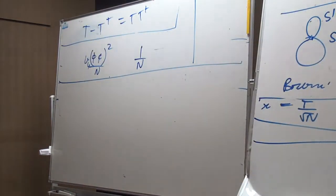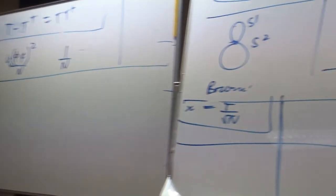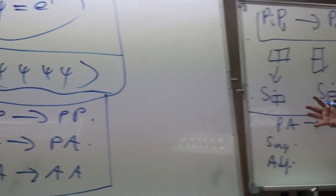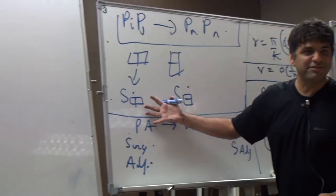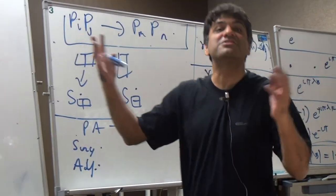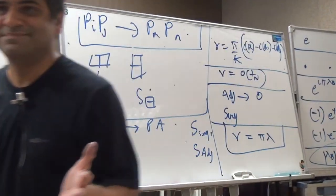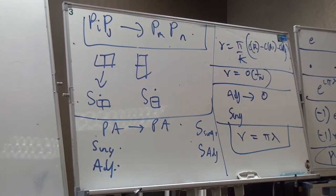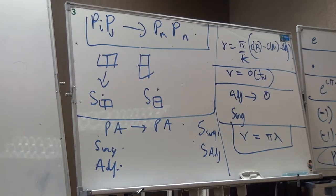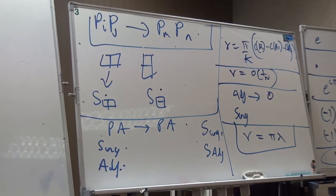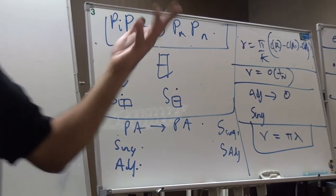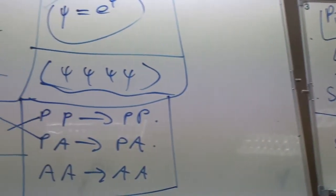So clearly in this whole process, there are three simple scattering matrices and one interesting one. The singlet exchange has non-trivial unitarity interactions and non-trivial non-relativistic behavior. The other three are a bit boring in these respects.